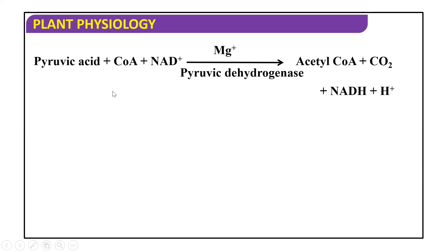You can see the reaction: pyruvic acid + coenzyme A + NAD+, with the help of pyruvic dehydrogenase — which is an enzyme — and in the presence of magnesium ions, gives rise to acetyl coenzyme A + carbon dioxide + NADH and a hydrogen molecule. So there is a removal of all hydrogen ions and there is a release of carbon dioxide.